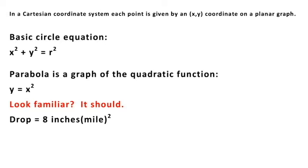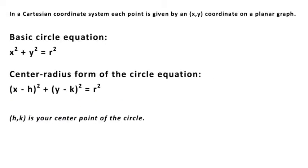Even if I use the oblate spheroid model of the earth it still wouldn't work — you're not going to get a parabola. Remember how I said if a planet's orbit equaled a parabola it would leave the system and never come back? That's because the two legs continue into infinity. This is just the center-radius form of the circle equation. It allows you to find any point along the circle if you know your center point using your radius — that's basically all it says.